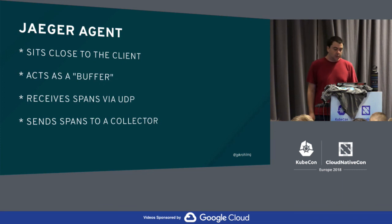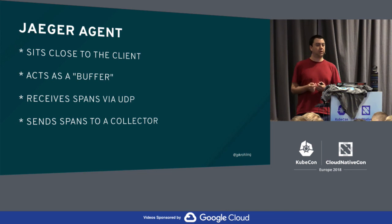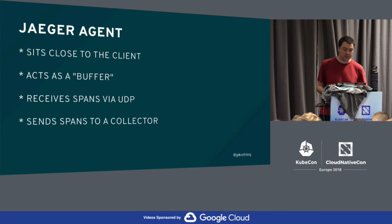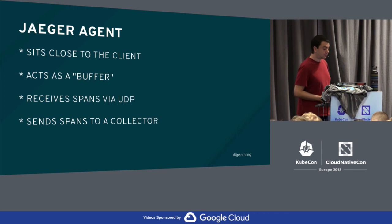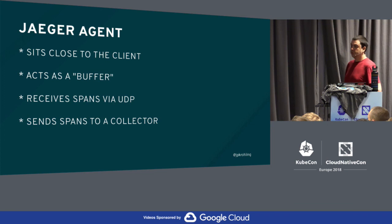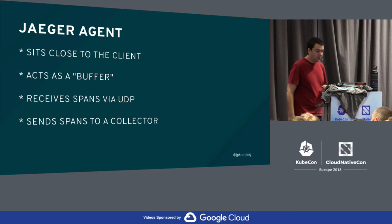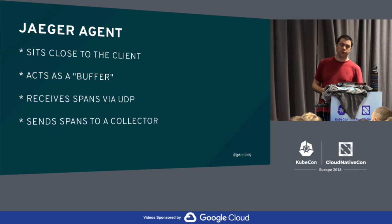The agent is a component that sits very close to the client, usually localhost. What localhost means today is quite cloudy — is it the bare metal, or in a Kubernetes context, is it the node or the pod? The agent acts as a buffer. In bare metal scenarios you may have one agent and several services running on the same server, all sending data to that same agent. The agent piles span data and sends it to the collector — it receives data via UDP and sends to the collector via TCP, usually through Thrift or HTTP.